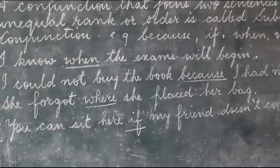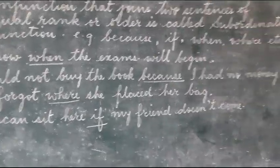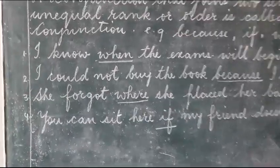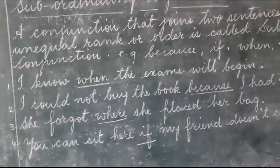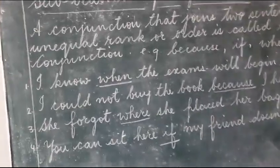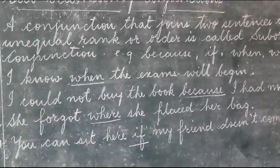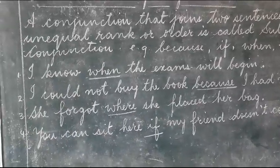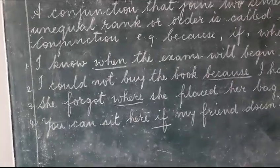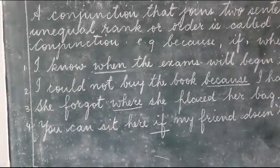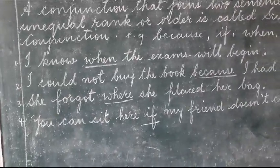I know when the exams will begin. Here we have the conjunction 'when.' If I say 'I know,' then what do I know? That means it is incomplete — it has to depend on something to give a complete sentence. So: I know when the exams will begin. Here, 'when' is the subordinating conjunction that has joined two sentences into one full, complete sentence.